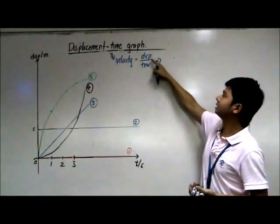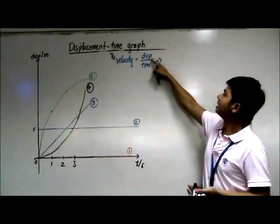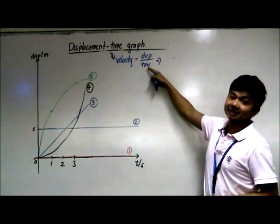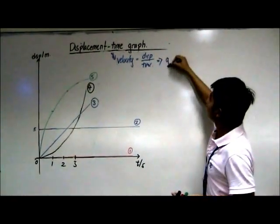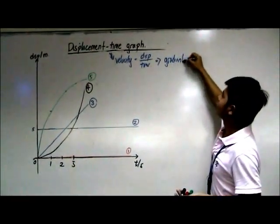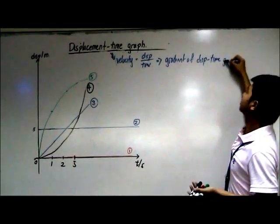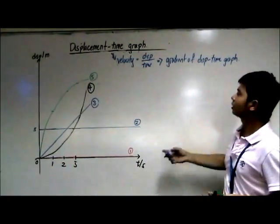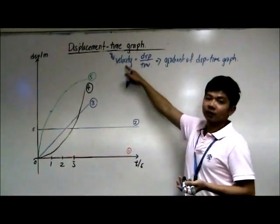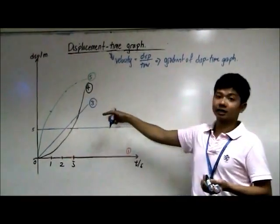So the gradient tells us the ratio of displacement against time. This is the gradient of the displacement-time graph. So to look at velocity, we just need to look at the gradient.